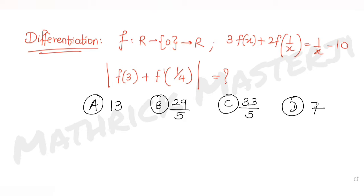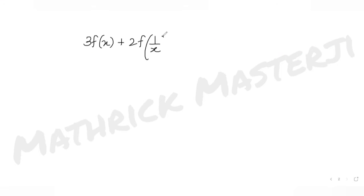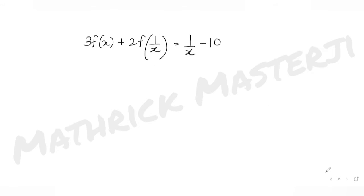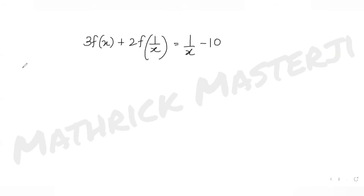Let's see the solution. The function given to us is 3f(x) + 2f(1/x) = 1/x - 10. To solve this, instead of x everywhere I will substitute 1/x.